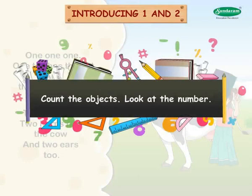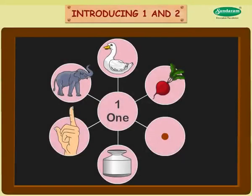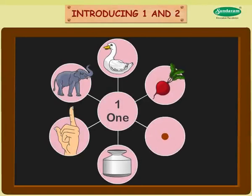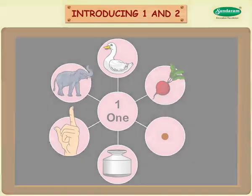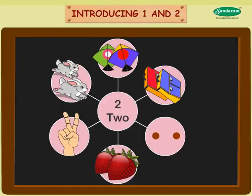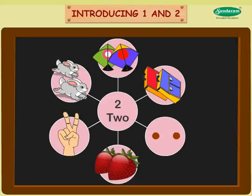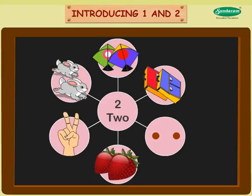Count the objects. Look at the number. One duck. One beetroot. One dot. One pot. One finger. One elephant. Two kites. Two bags. Two dots. Two strawberries. Two fingers. Two rabbits.